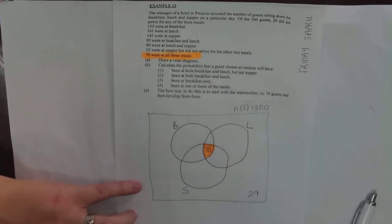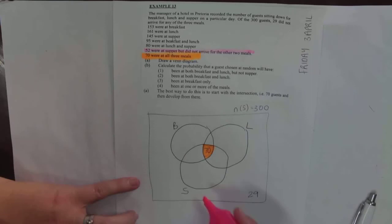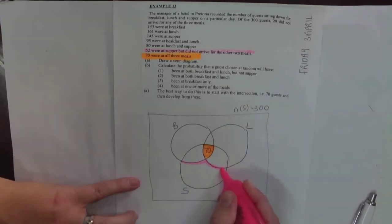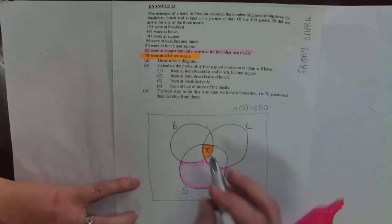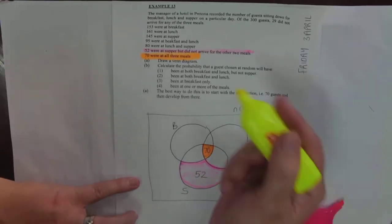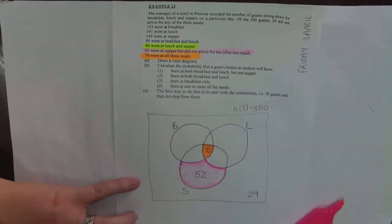52 were at supper but did not arrive for any of the other two, so only supper. We are looking at that piece there, that is 52 people there. 80 were at lunch and supper, so lunch and supper, the total there must be 80. Now I already have 70, how much do I have left? 10 of them.